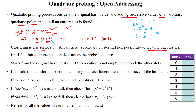Initially, probing starts from the original hash location. If an empty slot is not found at that first location, we proceed by adding a polynomial term. Consider this example: the original location is found using the hash function. If an empty slot is not found there, we go to the probe sequence using the quadratic polynomial term. The table is given here.